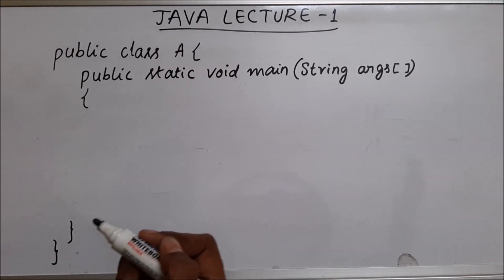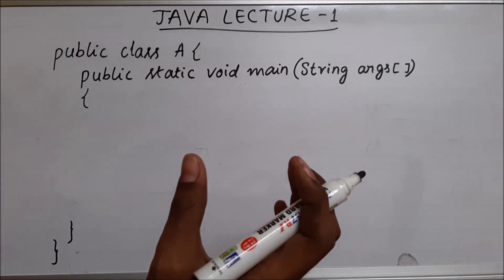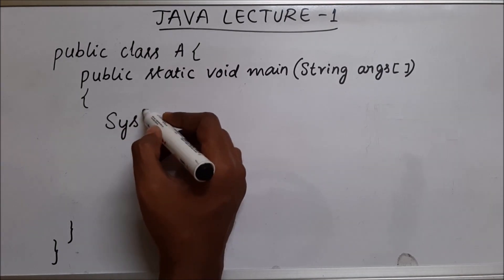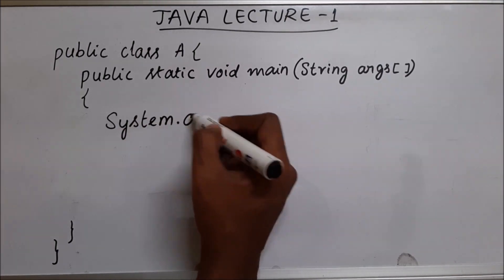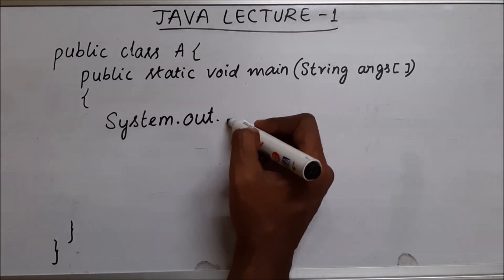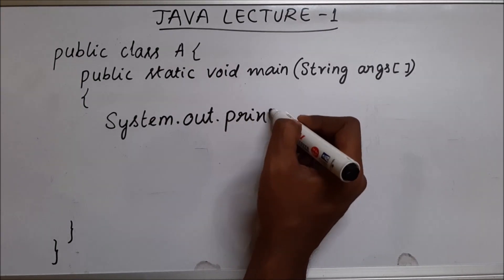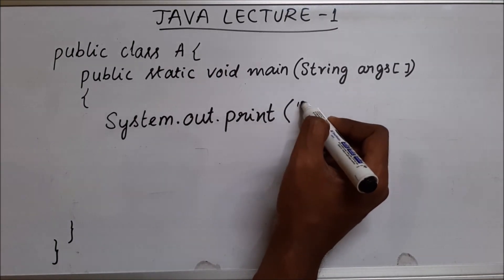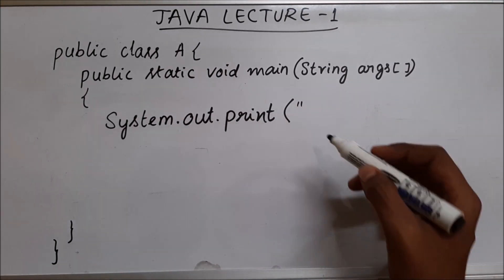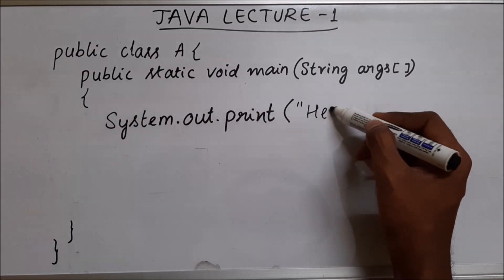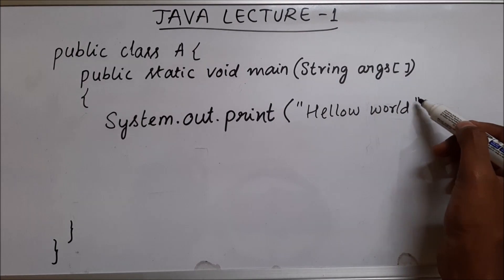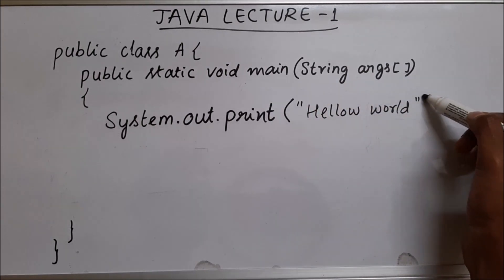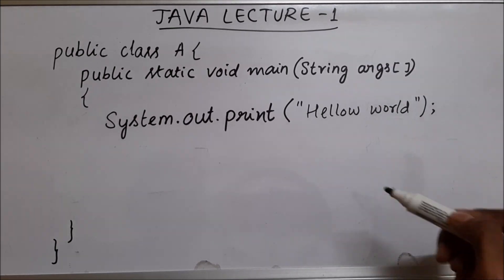So let's write a program where we will be printing a word to our output screen. In order to print something to our output screen, we will say system.out.print and then we will open our brackets. Now inside these quotes we are going to write something. Let's write hello world, and we will finish it with another set of quotes.